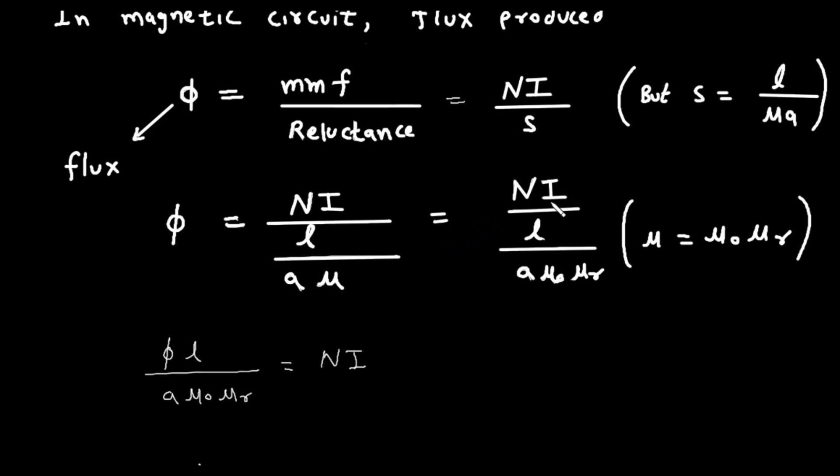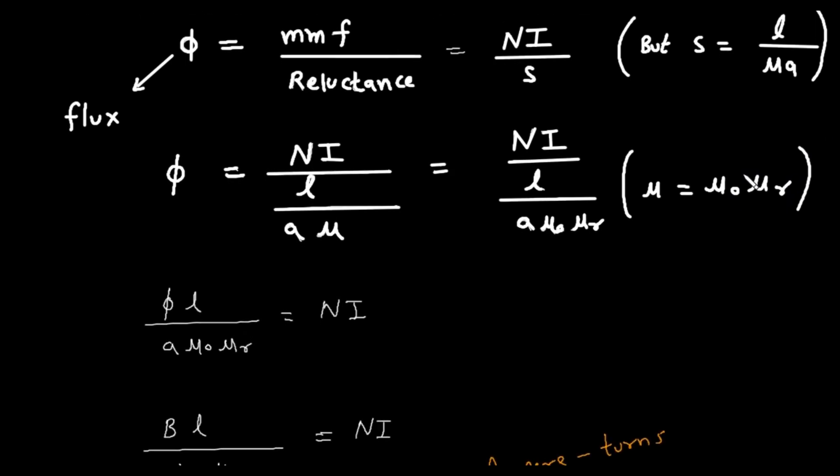Now it equals n i upon l upon a into mu zero into mu r. This mu can be replaced by mu zero into mu r. Mu r is the relative permeability and mu zero is the permeability of air or vacuum.